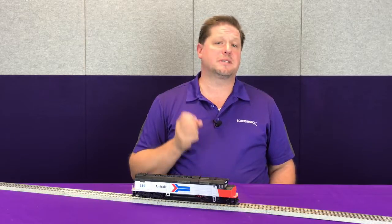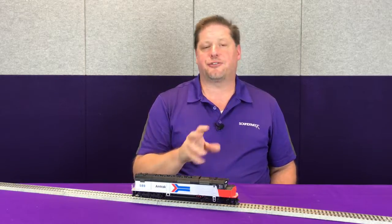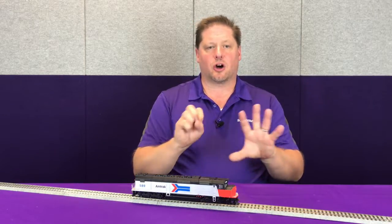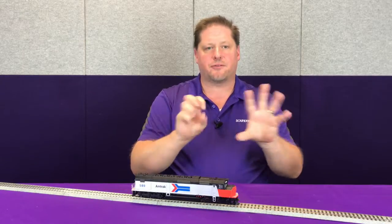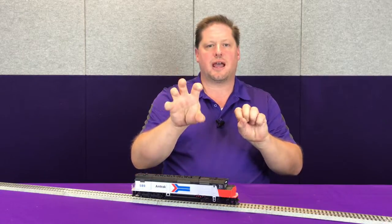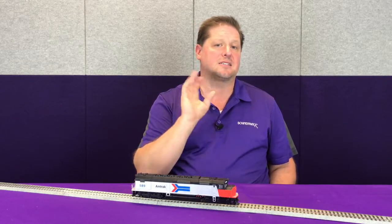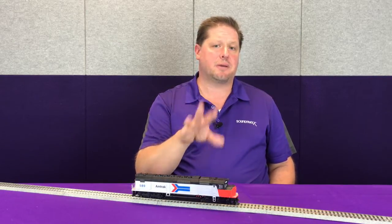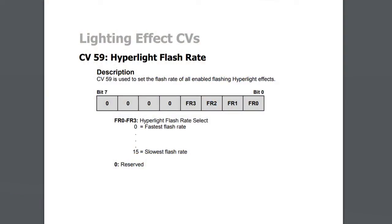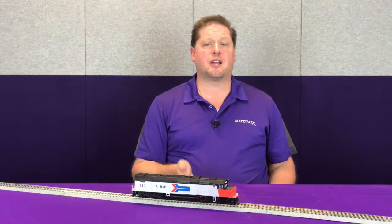The next qualifier is the flash rate, which determines how fast the lighting effect is displayed. For alternating flashing ditch lights, you can have them flash really quickly or really slowly to match your prototype based on the locomotive you're modeling. The same applies to the Mars light — you can set how fast that lighting pattern cycles. The range is 0 to 15, where 0 is the fastest flash rate and 15 is the slowest.